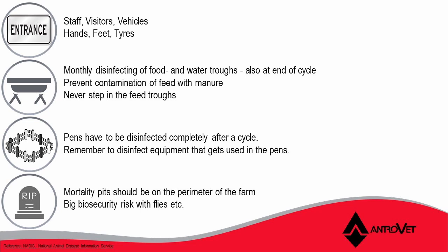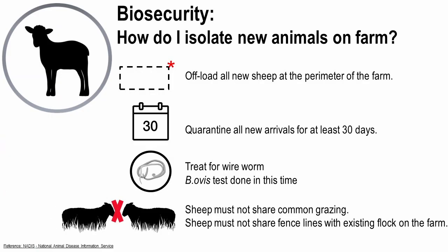We need to look at the pens and sections. Pens need to be sanitized completely after each cycle. Remember to sanitize equipment that gets used to clean the pens as well. Mortality pits should be at the perimeter of the farm because it's a big biosecurity risk with flies.